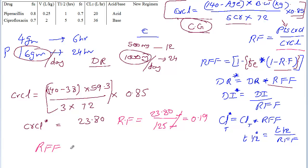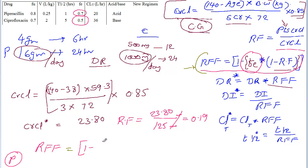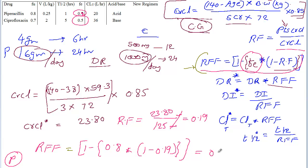Now we calculate the renal fudge factor. The formula is: 1 minus (fraction excreted unchanged times (1 minus RF)). Remember, the fraction excreted is different for different drugs — don't use the same renal fudge factor for two different drugs. For Piperacillin, the fraction excreted (Fe) is 0.8. So: 1 minus (0.8 times (1 minus 0.19)) gives a renal fudge factor of 0.35.